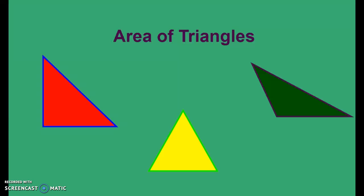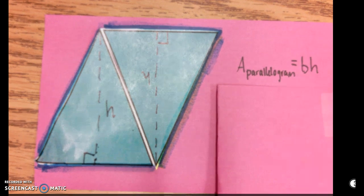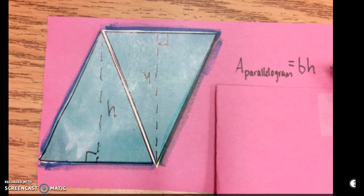In this video we'll be learning how to find the area of a triangle. In the last video we learned how to find the area of a parallelogram like this blue parallelogram here. To do that we use the formula for area of a parallelogram which is its base times its height.